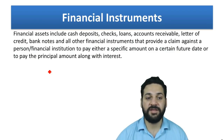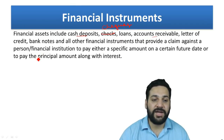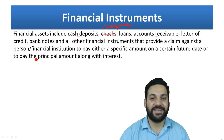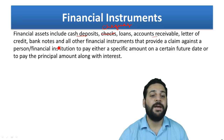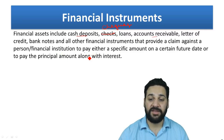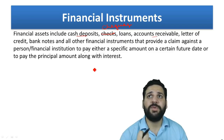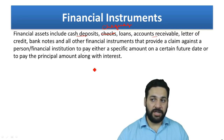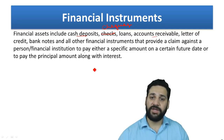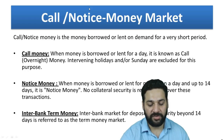Financial instruments include various financial assets such as cash deposits, cheques, loans, account receivables, letters of guarantee, banknotes, and other instruments that provide a claim against a person or financial institution to pay a specific amount. Essentially, when you hold an instrument in which a financial organization is obliged to pay you back — whether in principal, dividends, or interest — that is known as a financial asset or financial instrument.